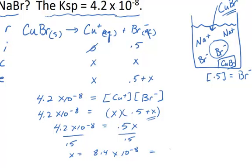X equals the concentration of the copper ion, not the bromide ion because the bromide ion is much higher. So that's the concentration of the copper ion in this particular solution at saturation because of the presence of the common ion.